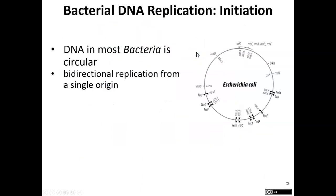For bacteria, replication occurs in a bi-directional mode. When DNA replication occurs, the DNA unwinds and you have replication on each strand, both running in a five prime to three prime direction. Because of the way the DNA unwinds, one strand is replicated continuously and the other discontinuously. In bacteria, replication occurs at a place called a replication fork.